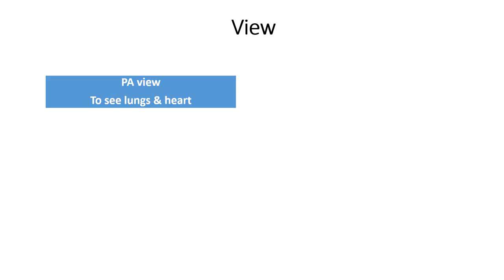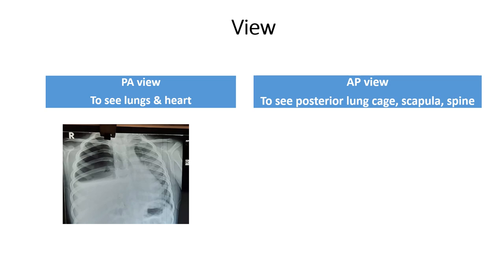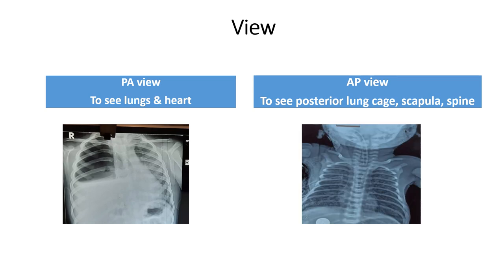The first point is view. In chest X-ray, we can perform the PA view, AP view, or lateral view. We prefer the PA view to see the lungs and heart. In AP view we cannot comment on the heart because apparent cardiomegaly can appear in AP view which is not actual. AP view is preferred for bones, lung cage, scapula and spine. We prefer lateral view whenever there is doubt about air in the mediastinum or pericardium — for example in pneumomediastinum, pneumopericardium — and sometimes for pleural disease or mediastinal mass. Otherwise, PA view is preferred for lung and heart pathology.